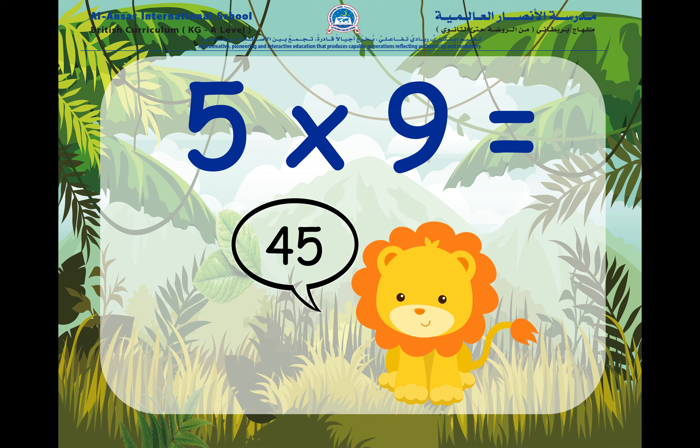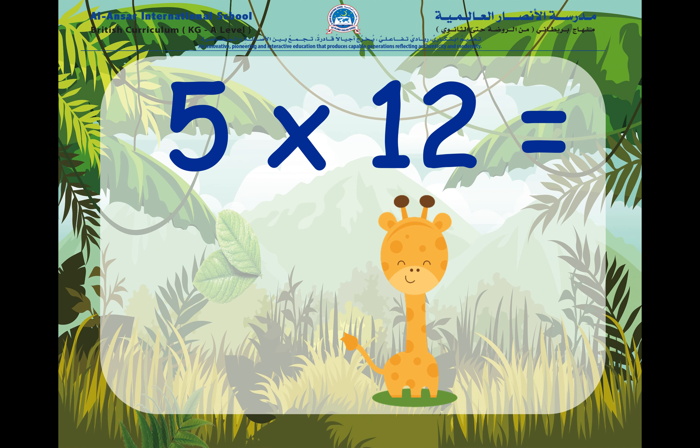And the last one: five times twelve. Remember, here we have twelve groups and in each group there are five things. So, we are going to say five times twelve, and we can count in fives to find the answer as well. Five times twelve is equal to sixty.